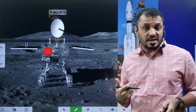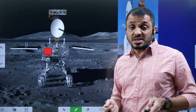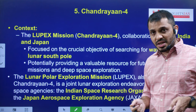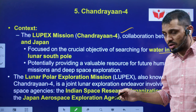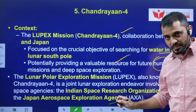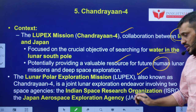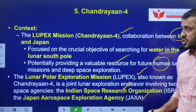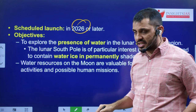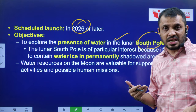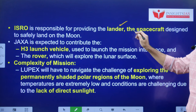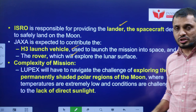The name of the mission is LUPEX — Lunar Polar Exploration Mission — a joint venture between ISRO and JAXA, which stands for Japan Aerospace Exploration Agency. The scheduled launch is in 2026 or later. India already has the success of Chandrayaan 3 behind it; Chandrayaan 2 was unable to achieve a soft landing. ISRO is responsible for the lander, while Japan provides the H3 launch vehicle and the rover. Chandrayaan 4 is India and Japan's collaborative mission to land at the moon's south pole.